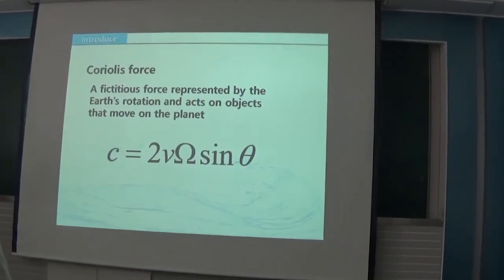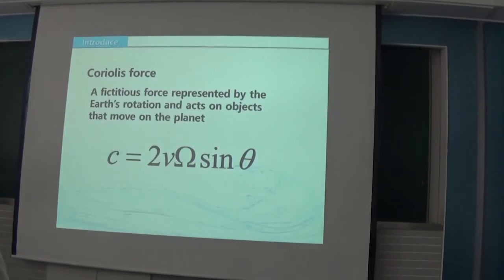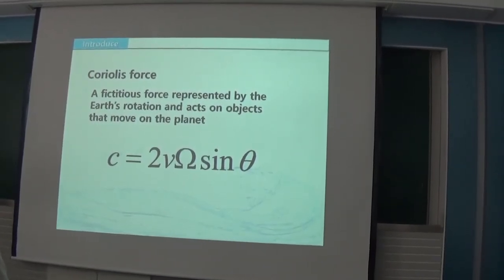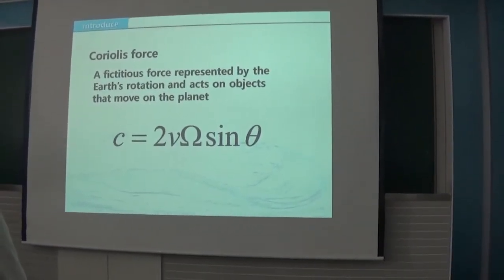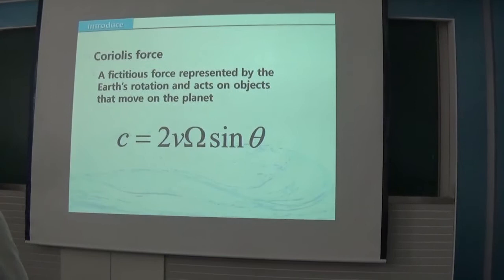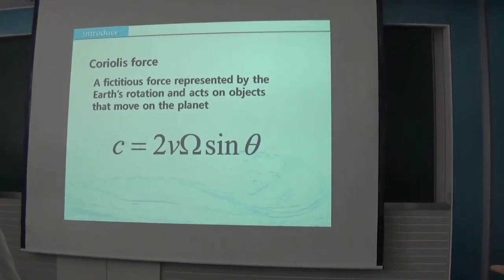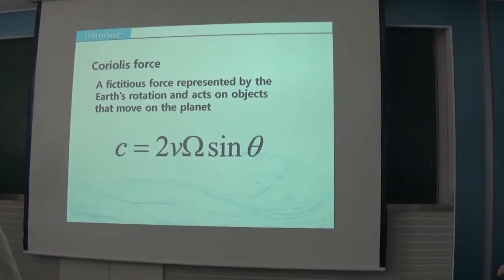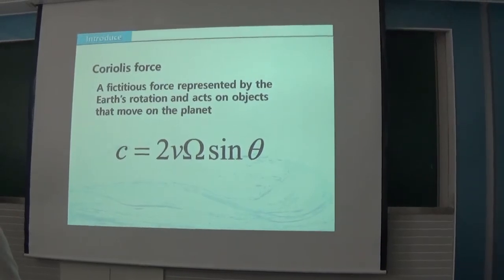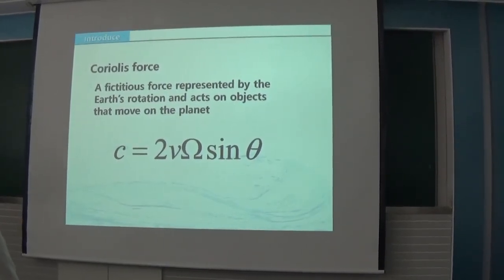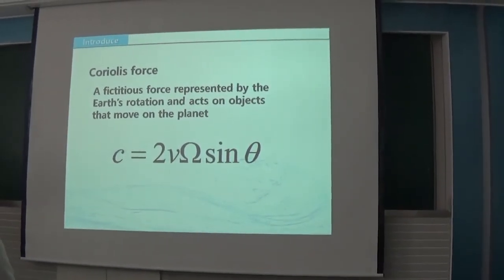Coriolis force is apparent motion caused by Earth's rotation, which works on any moving object on Earth. We also call it deflecting or shaking force. Coriolis force works to the right angular side of Earth's northern hemisphere, and to the left angular side of the southern hemisphere. This is the equation of Coriolis force. C is size of Coriolis force, v is movement velocity, omega is angular velocity of Earth, and theta is latitude.